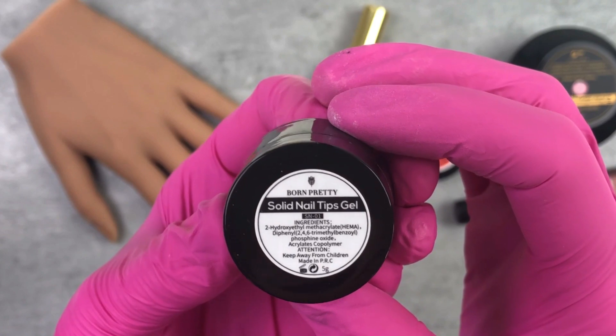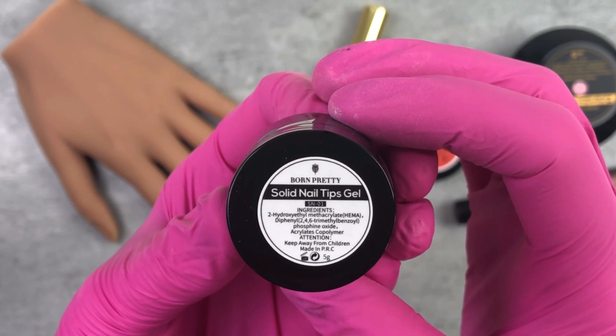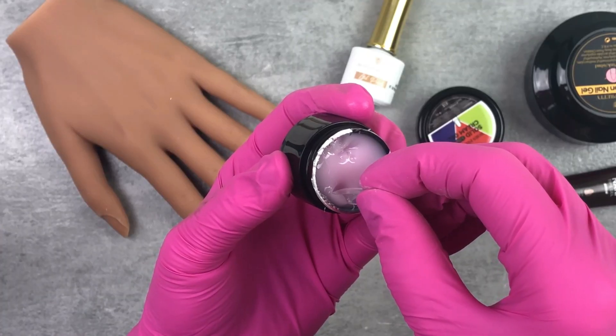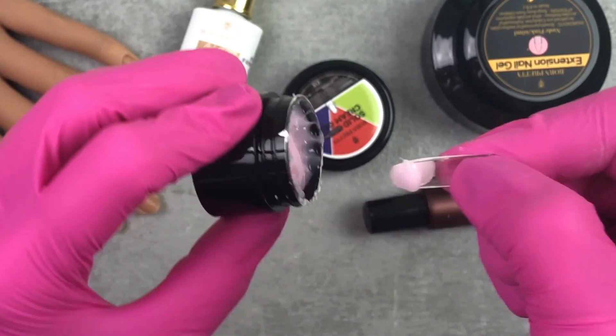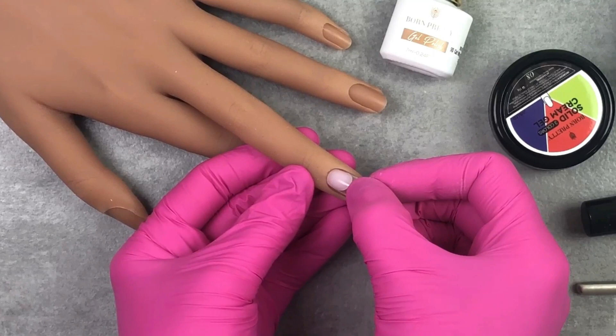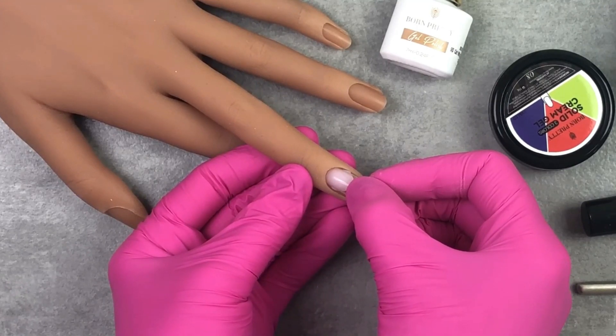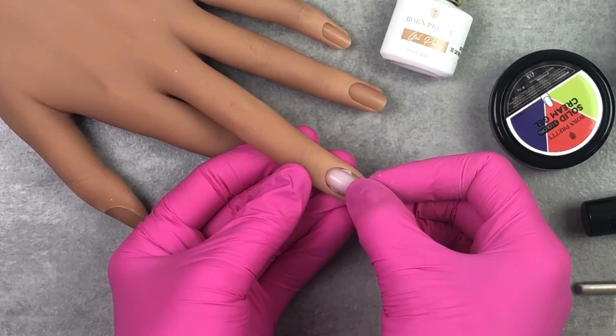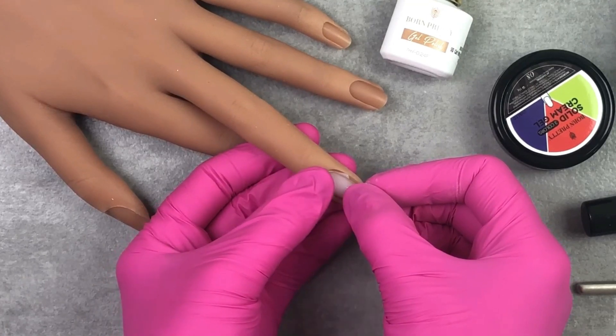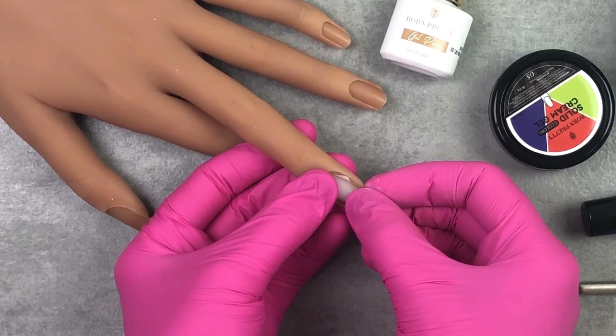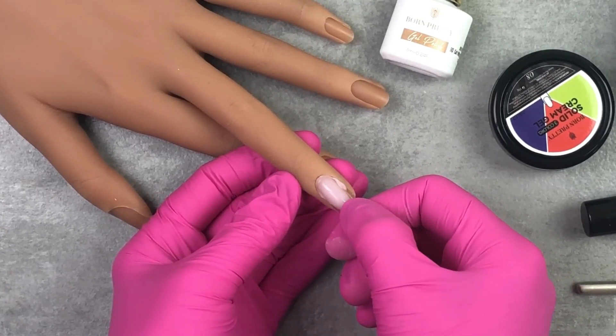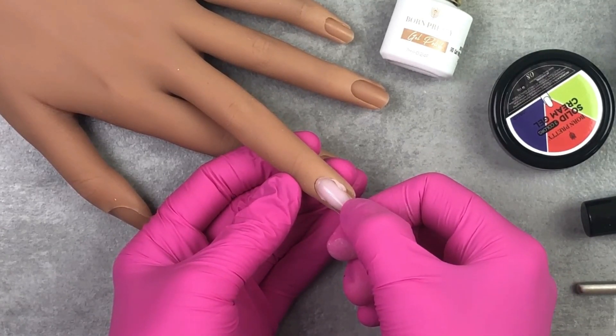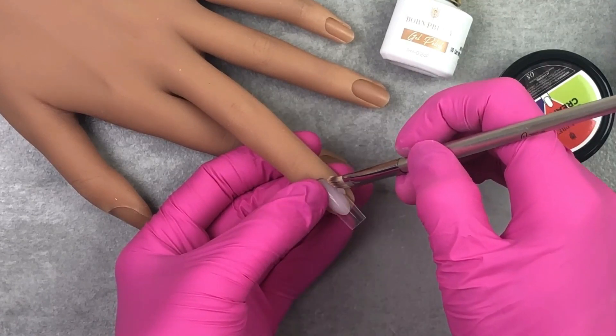This is their solid nail tips gel and you use this gel to attach a nail tip. I'm using a jelly tip for this. Before using it you would prep the nail by lightly buffing off the shine and applying a base coat. It does take some practice to get the proper amount, so don't think you're going to get it perfect the first time. Like all nail supplies, you just have to keep using it to get used to how it works. Slowly press from the cuticle all the way down and then wipe off any excess before curing.